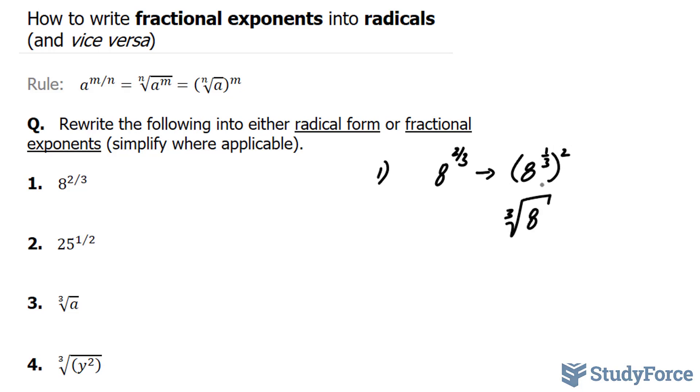Now we also have to the power of 2. So you can either write it like this or you can write this 2 inside the radicand right beside the 8 where we have the third root of 8 to the power of 2. Now it told us to simplify where applicable. We know 8 to the power of 2 is 64. So let's replace 8 to the power of 2 with 64.